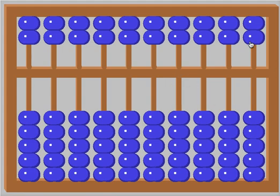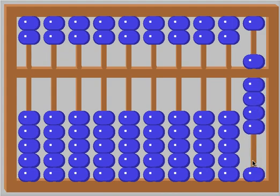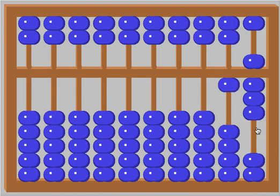Let's do a really quick addition problem. 5, 6, 7, 8, 9. That's 9. Let's add 9 more. Isn't 9 really 10 minus 1? That's 18. 9, 18. Next 9 is 27.